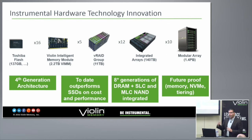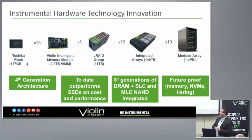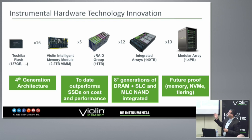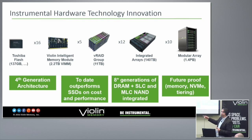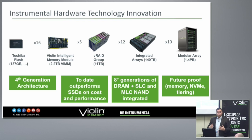From a hardware perspective, we take Toshiba flash chips — Toshiba is one of our largest shareholders and we have a very strategic partnership with them. We build the Violin Intelligent Memory Modules, or VIMs, which today ship at 2.2 terabytes. We take those and build a RAID group out of them — we call it VRAID, which is about 11 terabytes, basically 4+1. A key part of our RAID implementation is the ability to manage latency when doing writes or erases at the flash chip level. We integrate this into an array that can scale up to three rack units, 140 terabytes. You can then scale all the way up to the 7700 modular array platform giving you 1.4 petabytes of raw flash, and using de-dupe and compression you could get up to 2.2 or more petabytes in a single rack today.